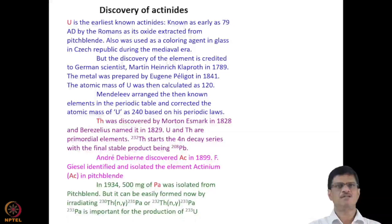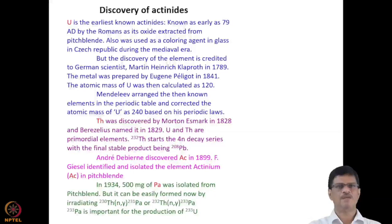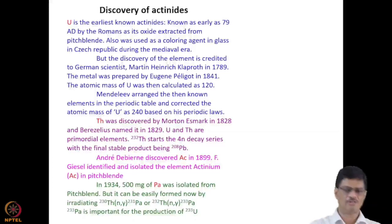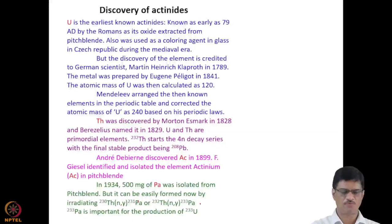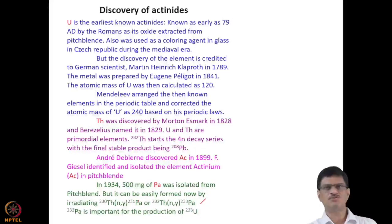Thorium was discovered by Morten Thrane Esmark in 1828 and named by Berzelius in 1829. Uranium and thorium are primordial elements, and Th-232 starts the 4N decay series with the final stable product being Pb-208. Actinium was discovered in 1899 by André-Louis Debierne; Giesel also isolated it from pitchblende. In 1934, 500 mg of protactinium was isolated from pitchblende, and it can now be easily formed by irradiating thorium-230 via an (n,γ) reaction giving Pa-231. Protactinium-233 is an important isotope as it decays to U-233, the fissile element used in AHWR reactors.